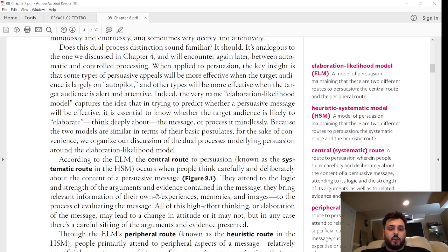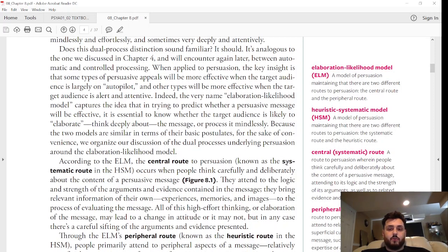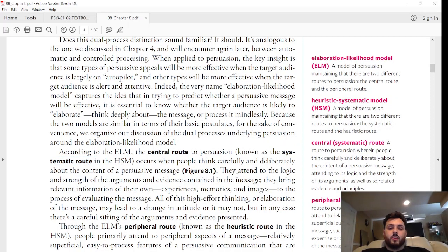According to the ELM, the central route to persuasion, known as the systematic route, occurs when people think carefully and deliberately about the content of a persuasive message. We can break this down very easily. If you had to remember this definition, the systematic route occurs when people are thinking systematically—they're breaking it down from phase one through the last phase. They're thinking carefully and deliberately about the content of the entire message that they're receiving.